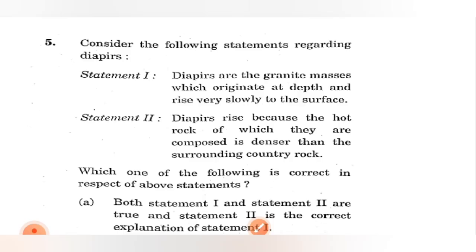Diapers are granite masses which originate at depth and rise very slowly to the surface - this is correct. Diapers rise because the hot rock of which they are composed is denser than the surrounding country rock - this is wrong, because if anything wants to get uplifted, there should be buoyancy. It will be there when it is lighter than the surrounding part, then only it will get uplifted. So the second statement is wrong, first one is correct. You can refer this diagram.